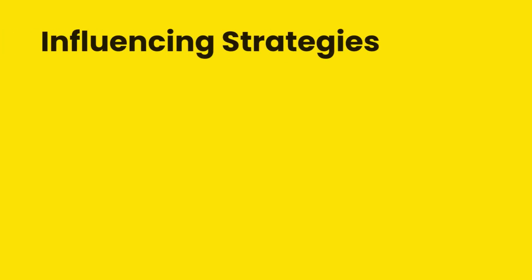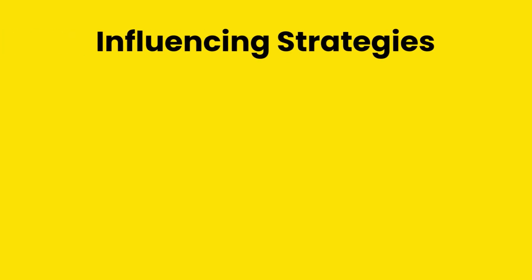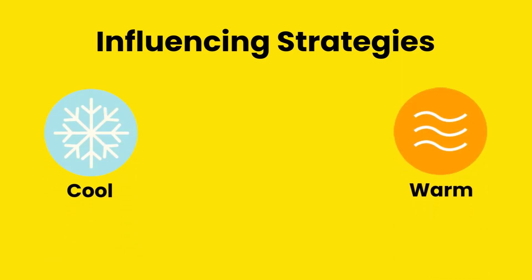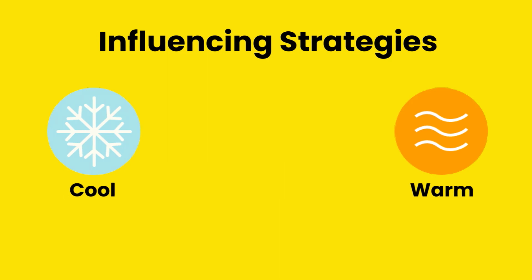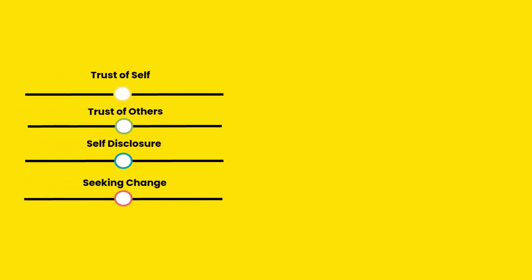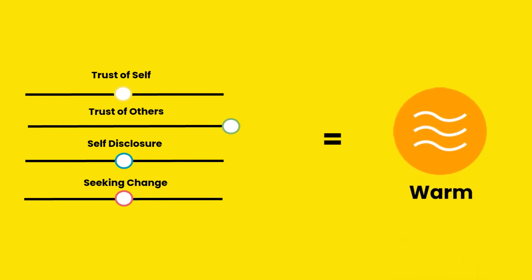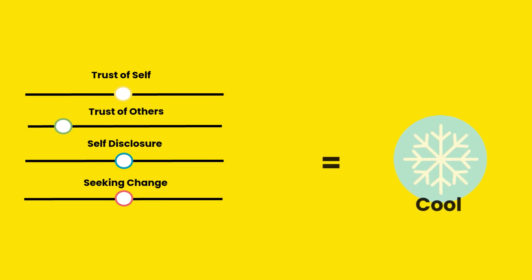When it comes to deploying influencing strategies, there are two temperatures that can be applied to each: warm and cool. Whether an influencing strategy is warm or cool depends on how you steer your trust of others. Exhibiting a high trust of others makes the influencing strategy warm, while adopting a low trust of others makes it cool.